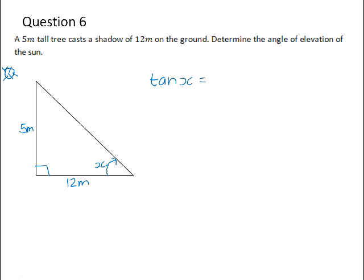So the tan of x will be equal to the opposite side over the adjacent side. So we do the shift tan of 5 over 12 in order to determine the value of x. And that gives us 22.62 degrees.